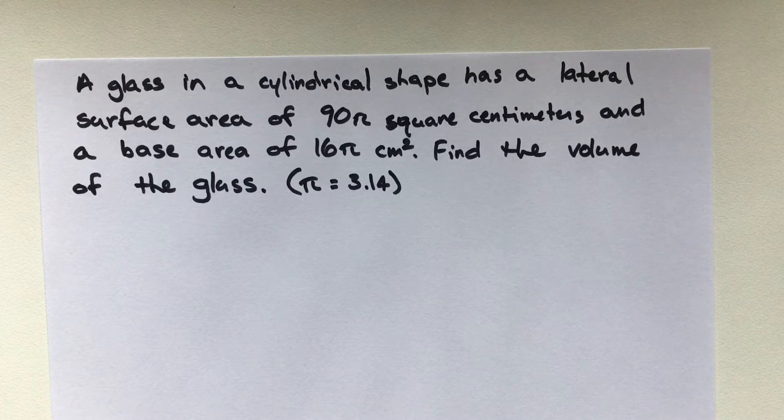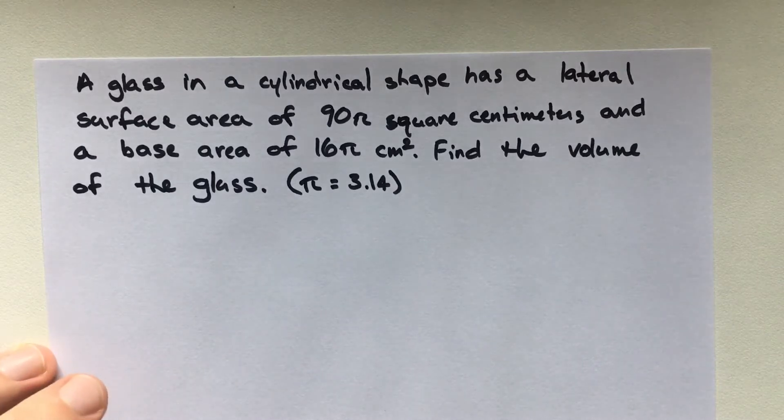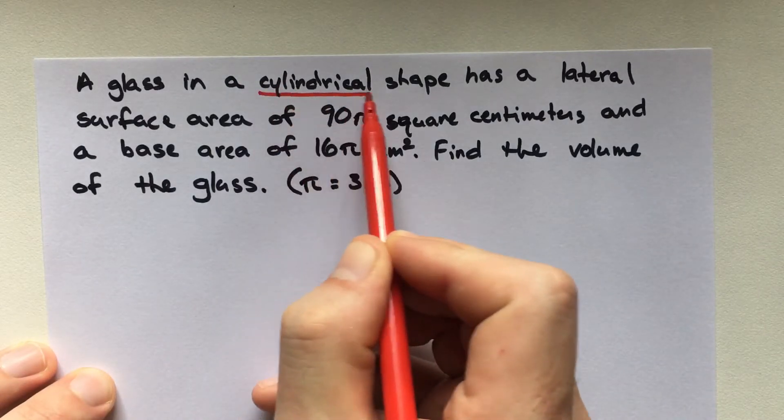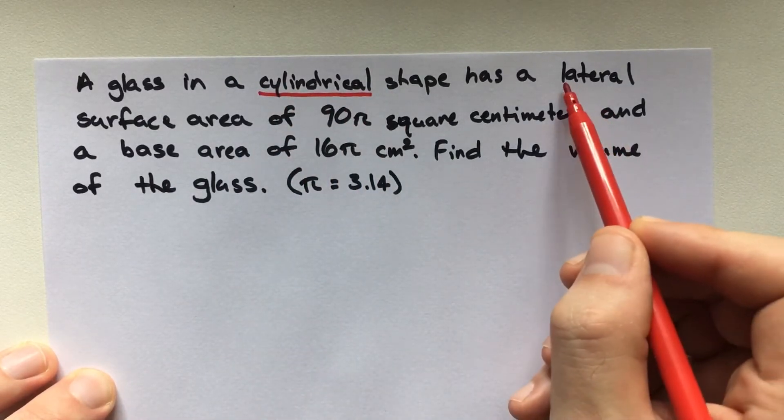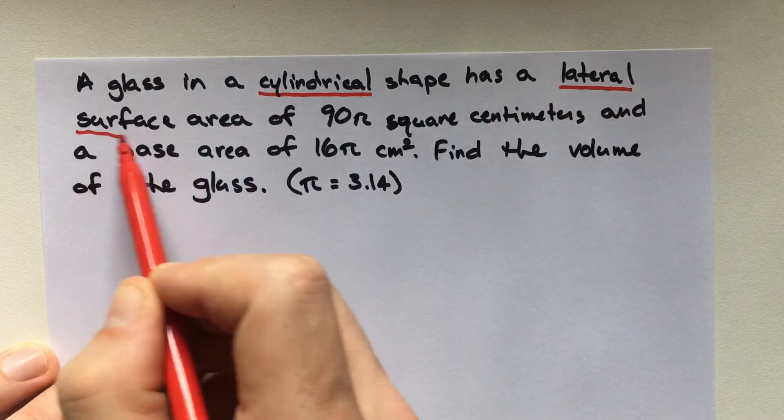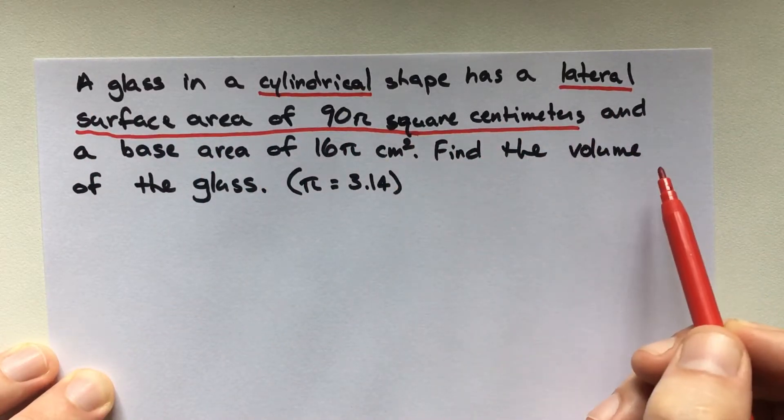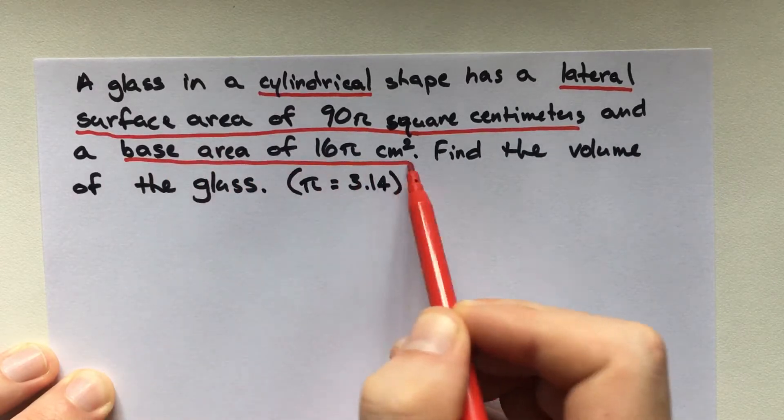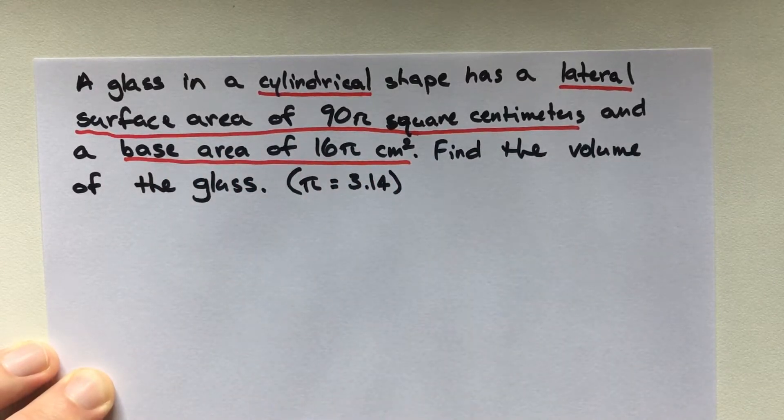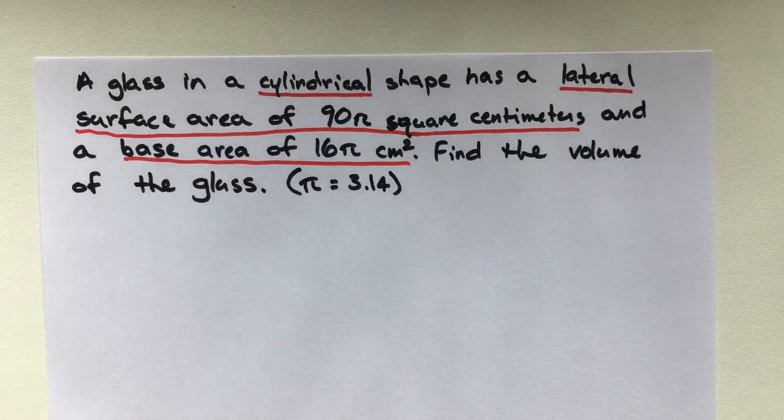Alright, so right away, let's see what we know. We know we have a cylinder. We know this cylinder has a lateral surface area of 90π square centimeters and a base area of 16 centimeters squared. And they want to do what? They want us to find the volume.